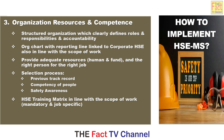Number three: Organization resources and competence. This requires a structured organization that clearly defines roles, responsibilities, and accountability — an org chart with reporting lines linked to corporate HSE, also in line with the scope of work. It also involves selecting the right person for the right job based on previous track record, competency, and safety awareness, with an HSE training matrix aligned to mandatory and job-specific requirements.